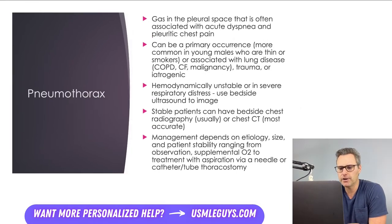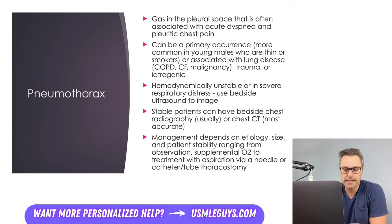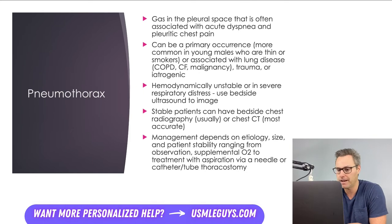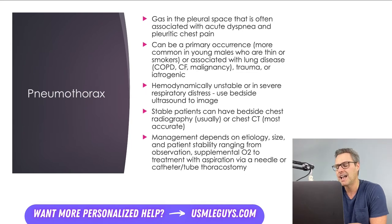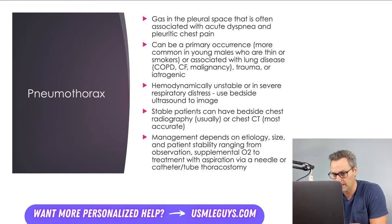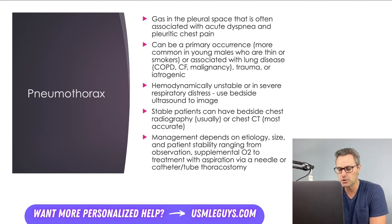The last condition is pneumothorax — caused by gas entering the pleural space, often associated with acute dyspnea and pleuritic chest pain, though some cases are asymptomatic. It can be a primary occurrence, typically in a young, thin, or smoking patient, or associated with lung diseases like COPD, cystic fibrosis, or pulmonary malignancies. It can also result from traumatic introduction of air — such as a stab wound — or iatrogenically, for example from a thoracentesis complication.